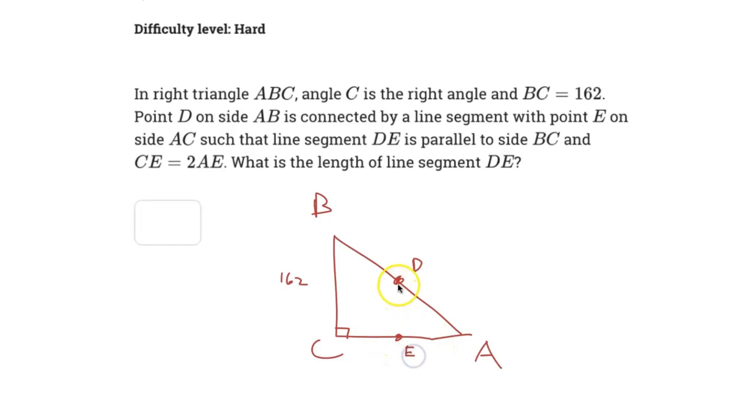They are connected by a line segment. It says that this line segment DE is parallel to the side BC. So DE here is parallel to the side BC. And the value of CE is twice that of AE. So let me switch colors. AE here, let's just call that value X. We know CE is just twice that value, so we call this 2X. And now they want us to find the length of line segment DE.